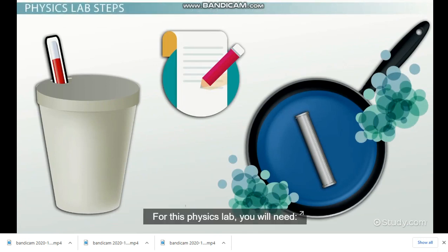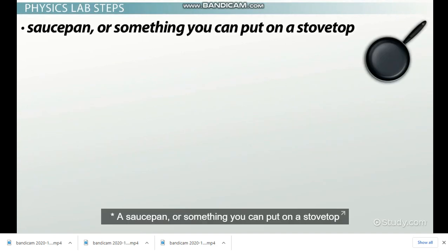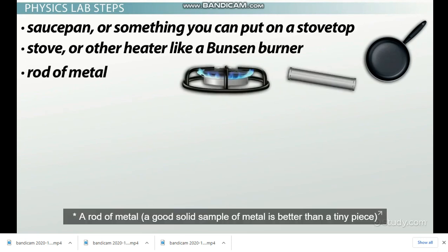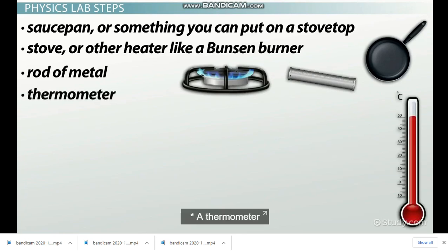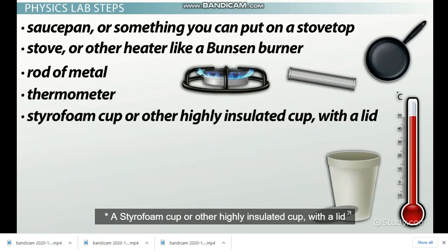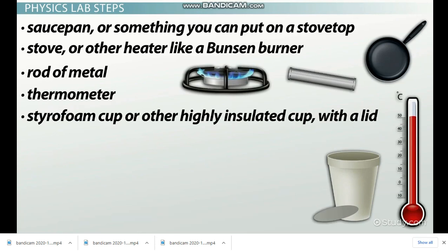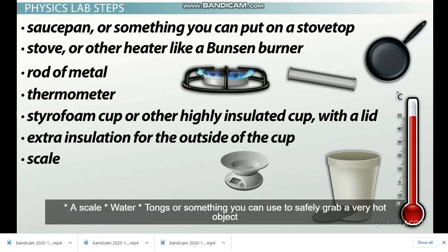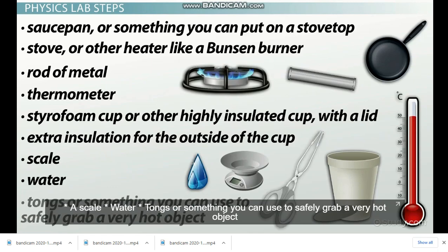For this lab you will need a saucepan or something you can put on a stovetop, a stove or other heater like a Bunsen burner, a rod of metal (a good solid sample is better than a tiny piece), a thermometer, a styrofoam cup or other highly insulated cup with a lid, you can cut a lid from a separate piece of foam if you don't have one. Extra insulation for the outside of the cup - the better insulated cup the better your data will be. A scale, water, and tongs or something you can safely grab a very hot object with.